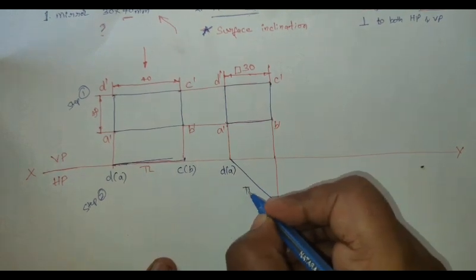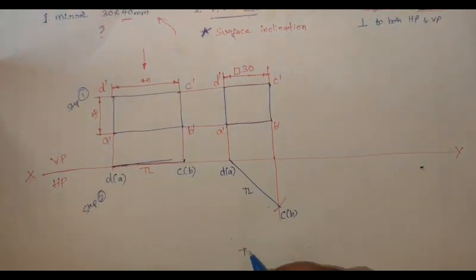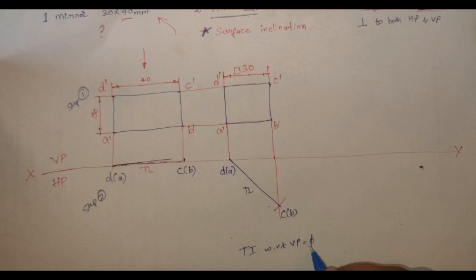True length inclination with respect to VP is 5 degrees. Find the value of the 5 degrees with the help of the protractor.